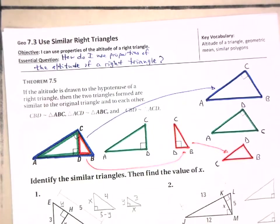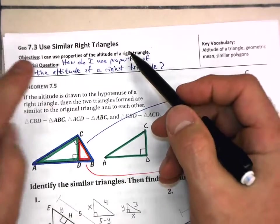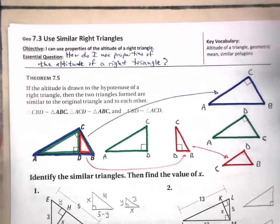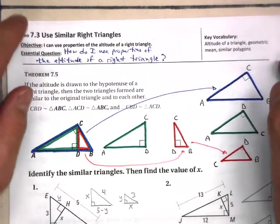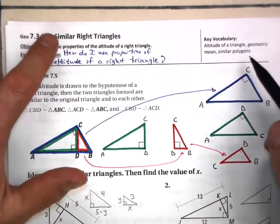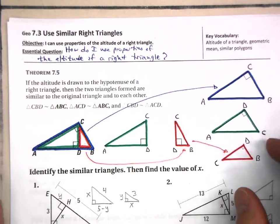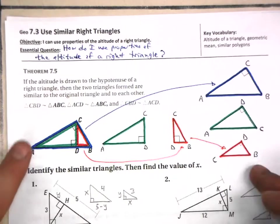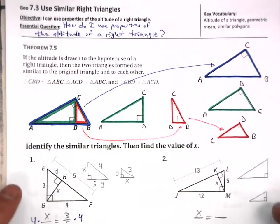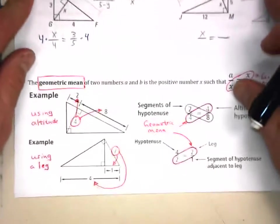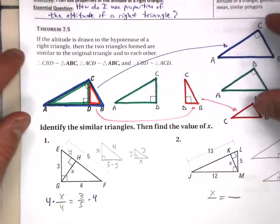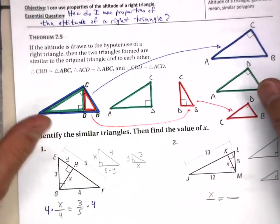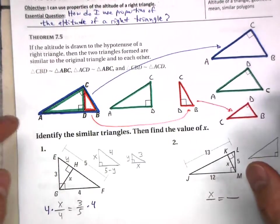Welcome to 7.3, use similar right triangles. Now this can get complicated. I'll tell you up front, it can get kind of confusing, but let me lay it out for you.